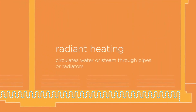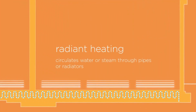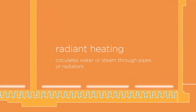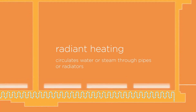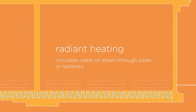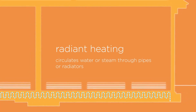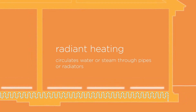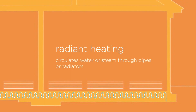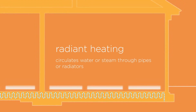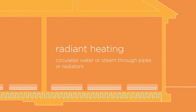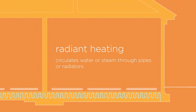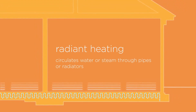Hot water heating systems circulate water or steam through pipes or radiators from a boiler. Hot water systems pump water through baseboard heaters or radiators to heat the home. Steam systems boil water and use pressure to distribute steam to radiators.